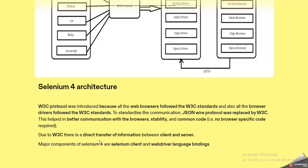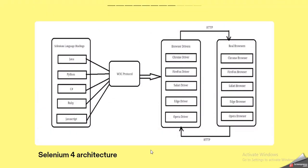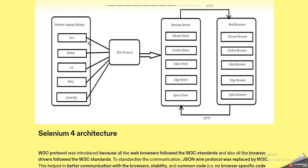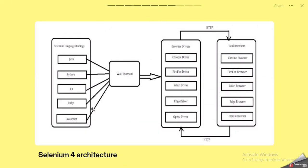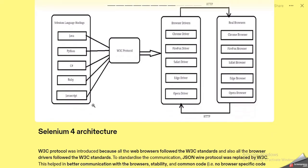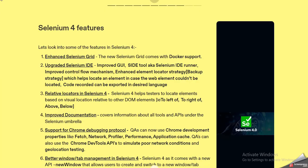Due to W3C, there is a direct transfer of information between client and server. The major components of Selenium 4 are the Selenium client and WebDriver language bindings. This change enables effective communication between the client side and the server side. Do not forget to explain the architecture along with the drawbacks of Selenium 3 as well as the features of Selenium 4.